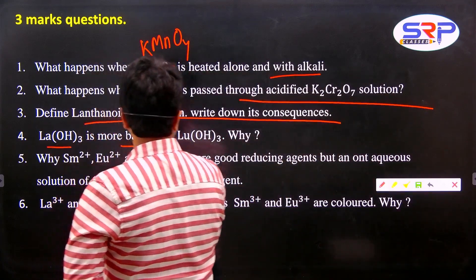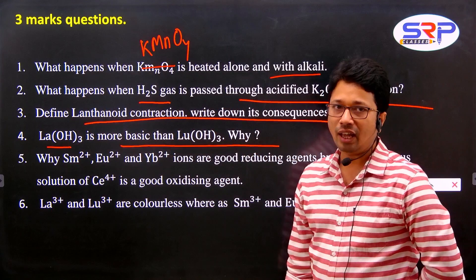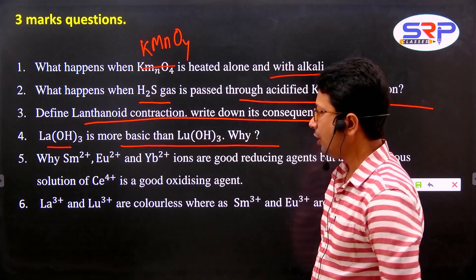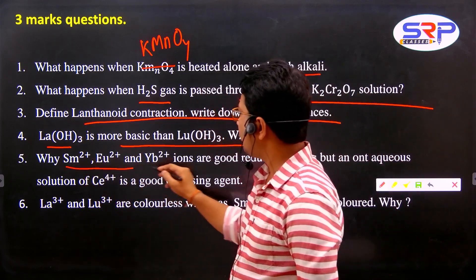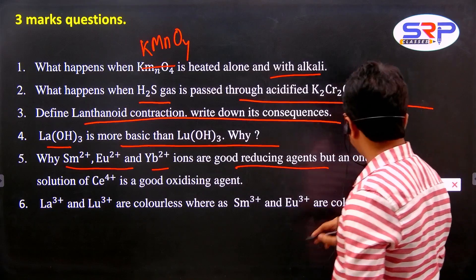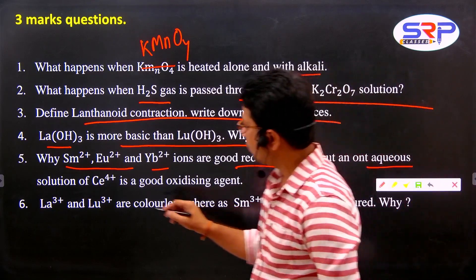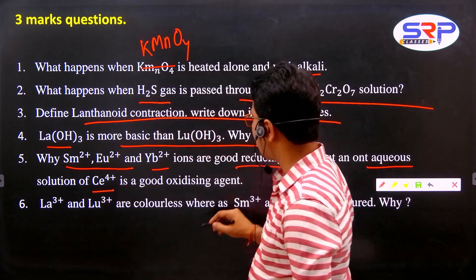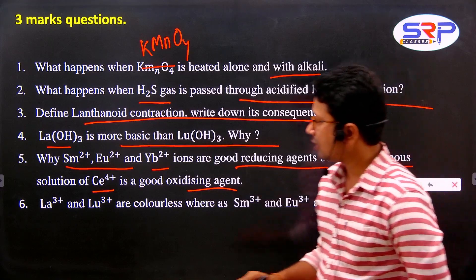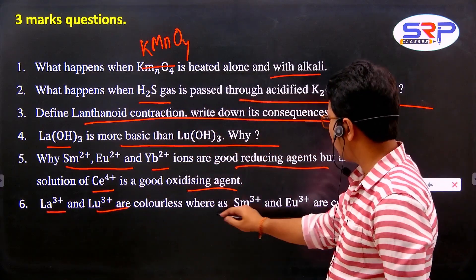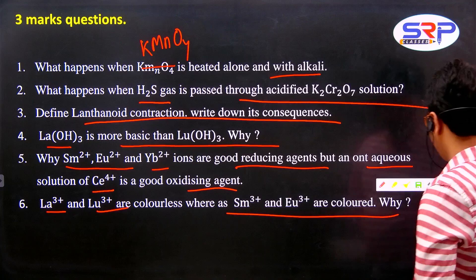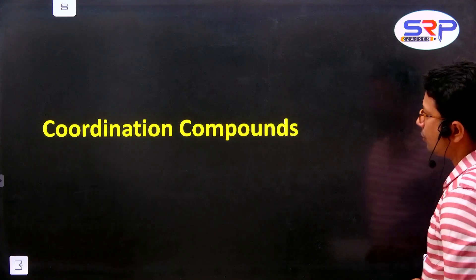Lanthanum hydroxide is more basic than lutetium hydroxide - why? Sm2+, Eu2+, Yb2+ are good reducing agents, but Ce4+ is a good oxidizing agent. La3+ and Lu3+ are colorless whereas Sm3+ and Eu3+ are colored - these are important lanthanoid comparison questions.